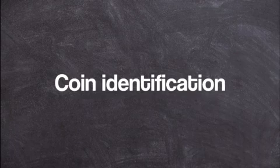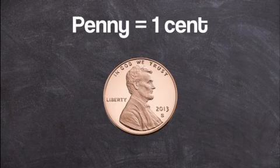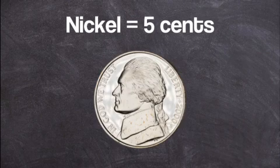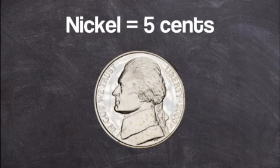The first one is the penny, with the lowest value of one cent. The color is brown or copper. The next one is the nickel, with the value of five cents, and the color is silver.